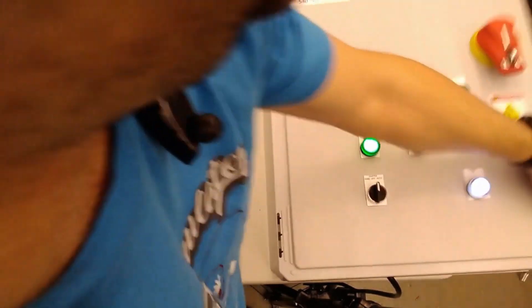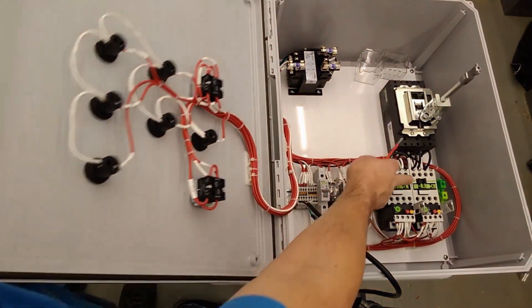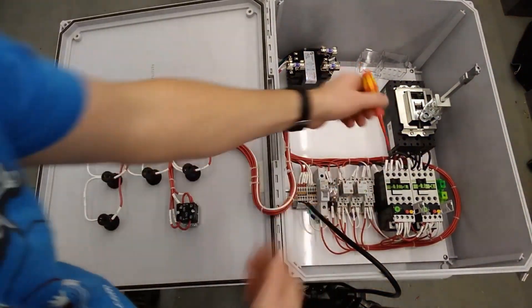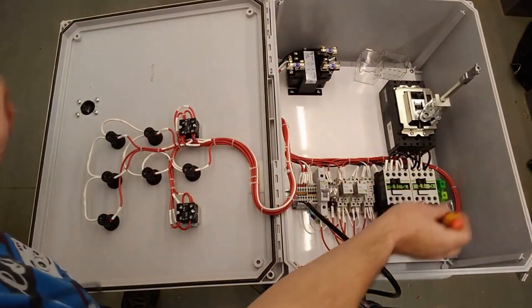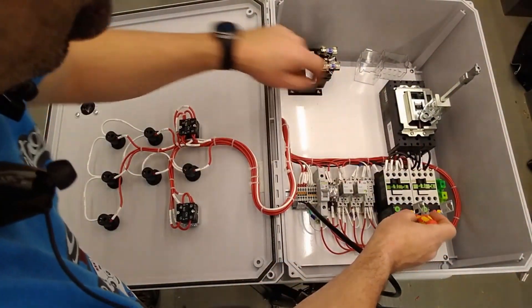You see we get the fan 1 running. You see the contactor is pulled in. Now I'm going to trip fan 1's overload and you'll see fan 2 come in.